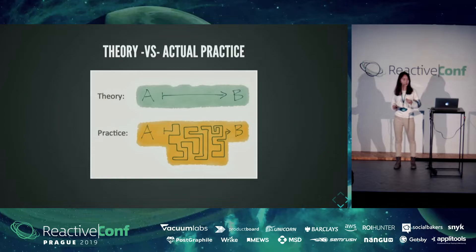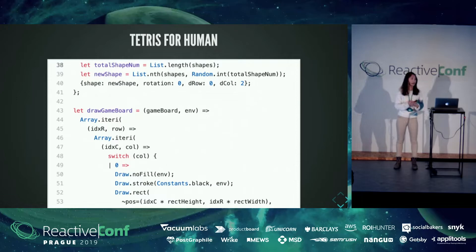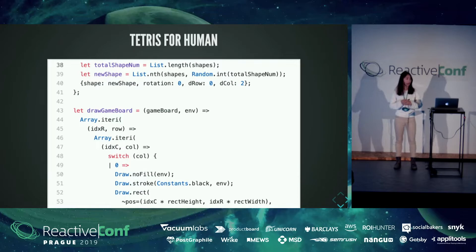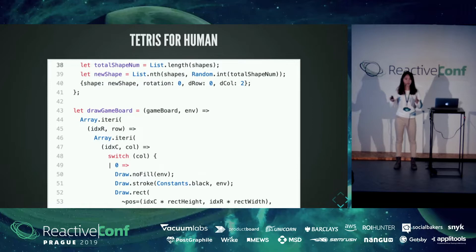Let's take Tetris as an example. In order to play a Tetris game on a Game Boy, we need to feed the Game Boy some Tetris game file data. This is an example of a Tetris game that I wrote a while ago using a language called Reason. Can anyone tell me where is the function we are trying to draw a game board? Yes, right there. In the middle, on line 43. But this is a file for a human. This is not something a computer is looking at.